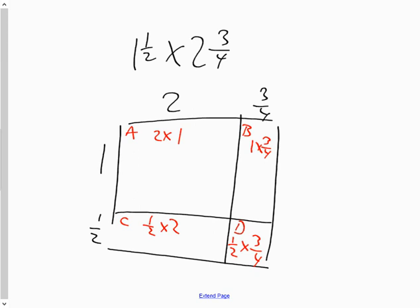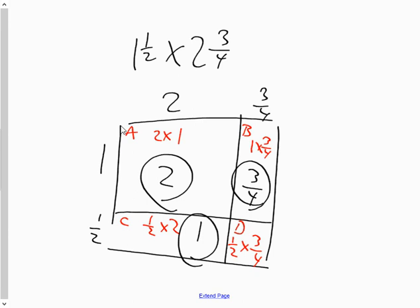This should be easy because I think three of them are going to be really easy. What's two times one? There's your area of A. What's three quarters times one? Just three quarters. What's one half doubled? Just one. And finally, last one. What's one half times two? What's one half times three quarters? Three eighths.